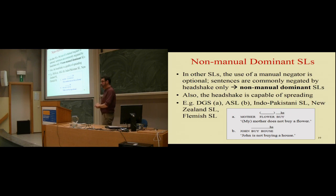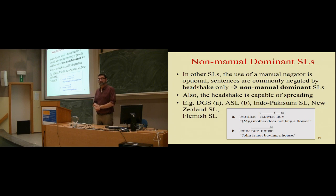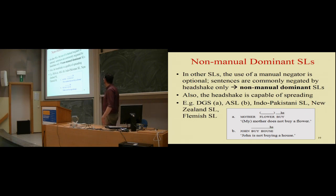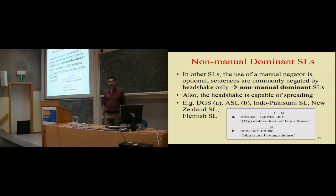So we have two broad groups: the manual dominant ones and the non-manual dominant ones. But within the two groups, you also find differences. A study comparing American Sign Language, German Sign Language, and Catalan Sign Language found that all three are non-manual dominant but behave differently with respect to the scope of the head shake. The word orders differ: ASL is subject-verb-object and negation precedes the verb, while German and Catalan sign language are SOV with sentence-final negation.